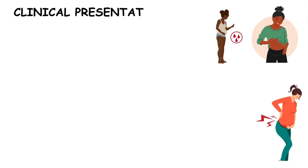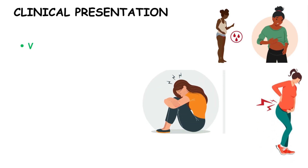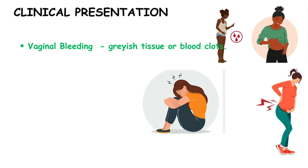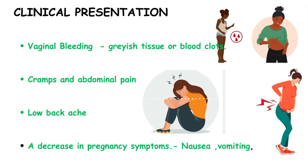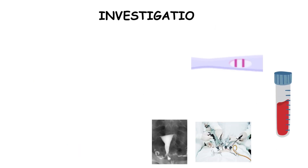The clinical presentation of a possible miscarriage may include symptoms such as vaginal bleeding, often accompanied by grayish tissue or blood clots. Cramps and abdominal pain are common, as well as a low backache. Additionally, there may be a decrease in pregnancy symptoms such as nausea and vomiting.